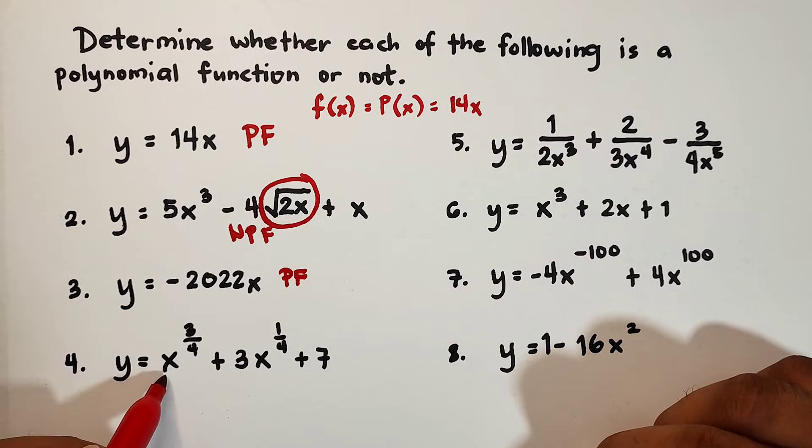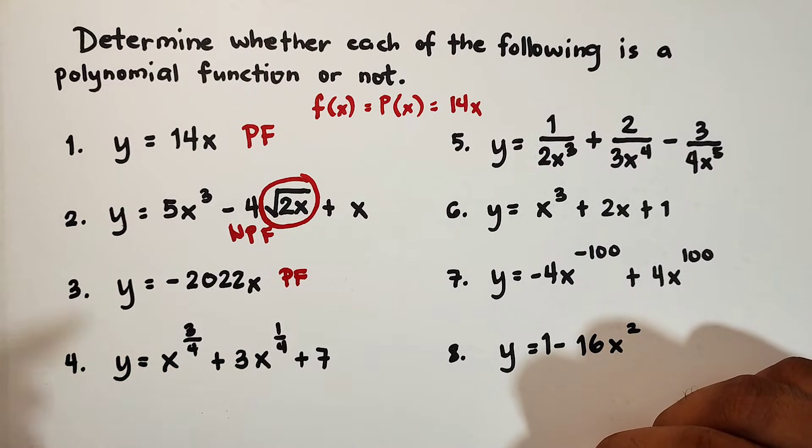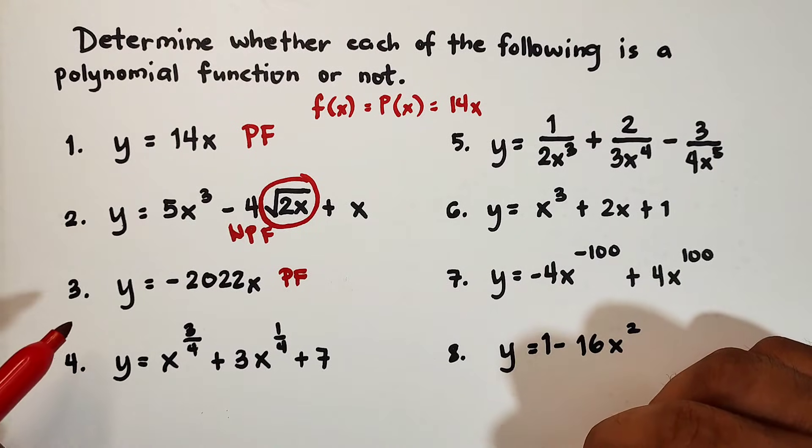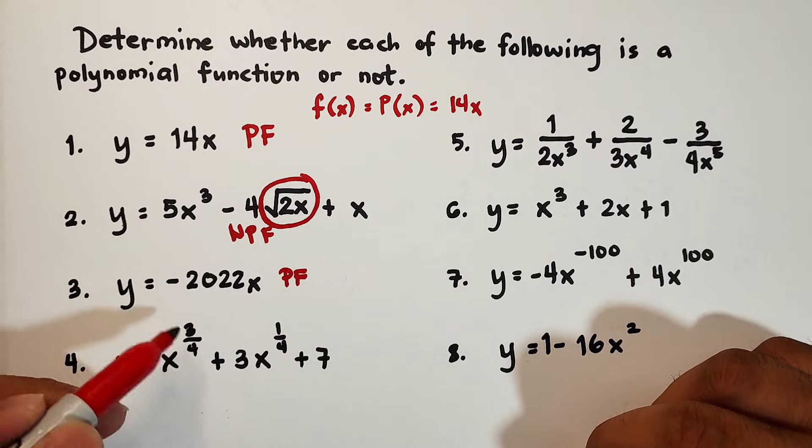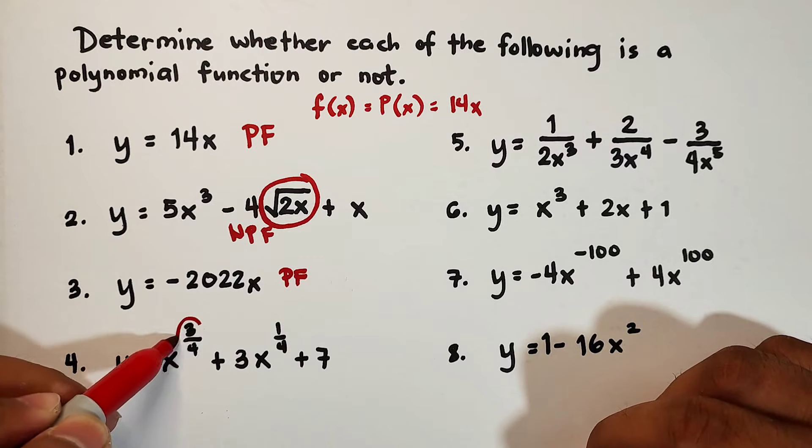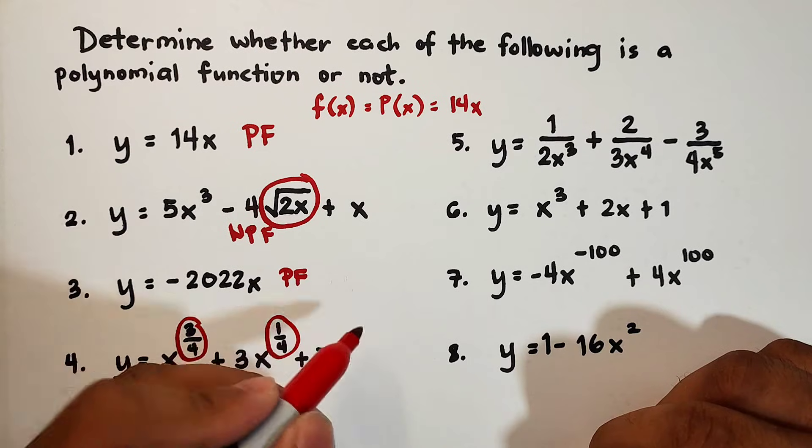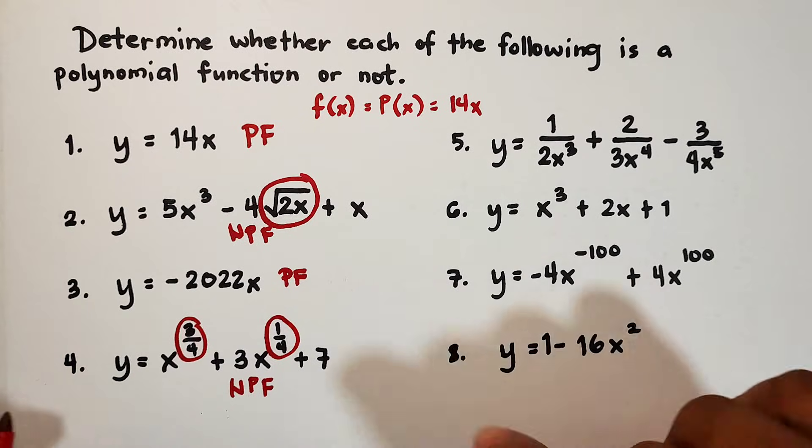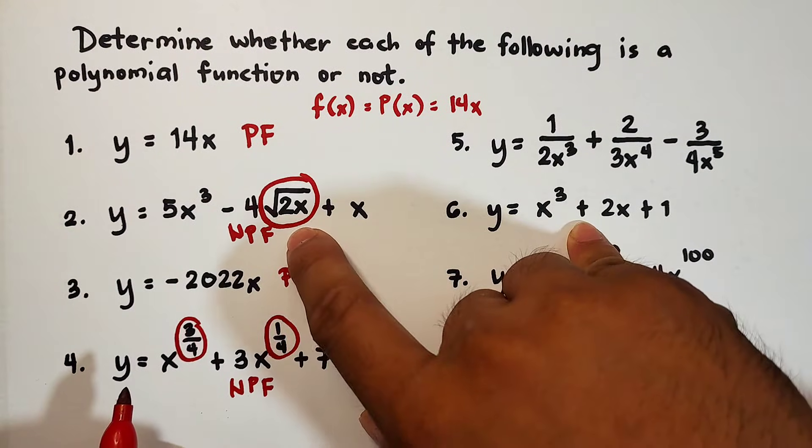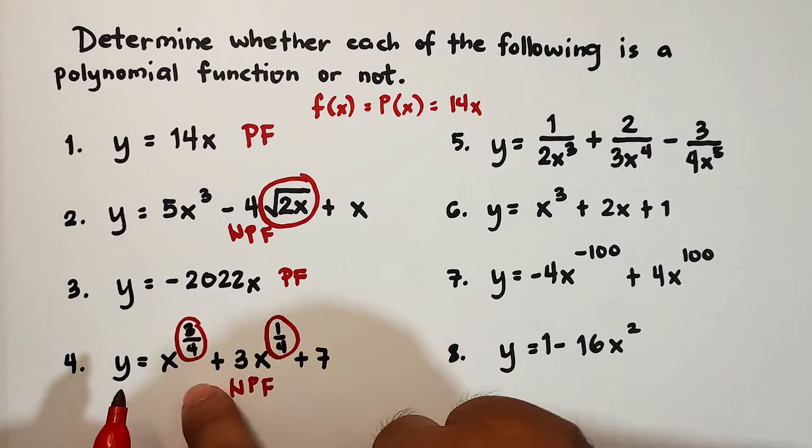y is equal to x raised to 3 over 4 plus 3 x raised to 1 fourth plus 7. So, the question here is this a polynomial function or not? This one is not a polynomial function because we cannot have rational or fractional type of exponent. As you can see, the first exponent is 3 fourths and the other is 1 fourth. So this is not polynomial function. We cannot have variables in the radical sign and we cannot have exponents that are fractions.